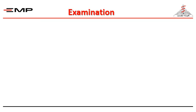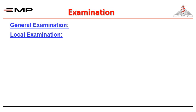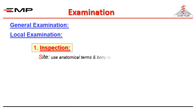The next step is to start examination, which always begins with general examination, followed by local examination. Local examination starts with inspection. You can remember the components of inspection by the six S's. Inspection should first describe the site — use anatomical terms and bony landmarks, which will make your description accurate.